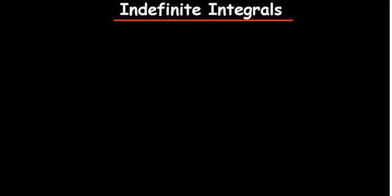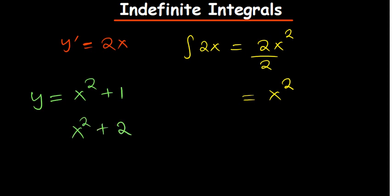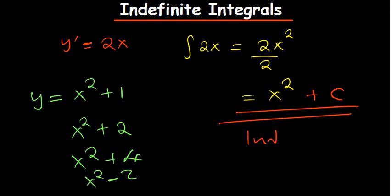Before we look at definite integrals and areas under the curve, let's look at indefinite integrals. When you look at a derivative of a given function — for example 2x — and they ask you to integrate, the integral of 2x means you increase the power by 1, giving power 2 divided by 2, so the answer becomes x squared. But you don't know the original function, and it likely had a constant. Since we don't know the exact constant, you add a constant C.